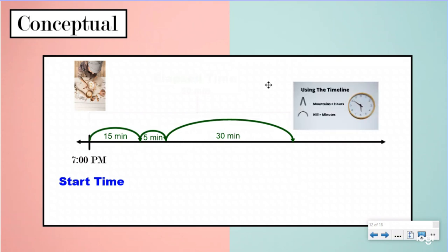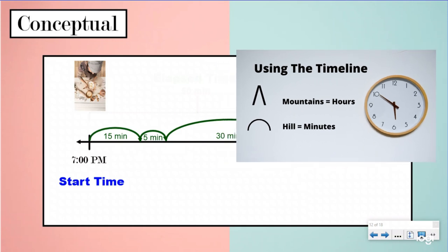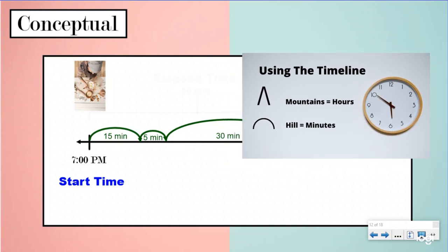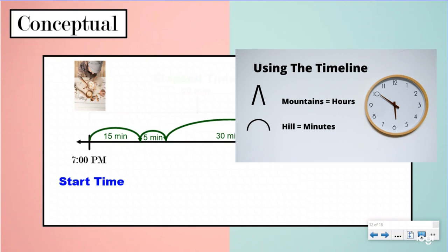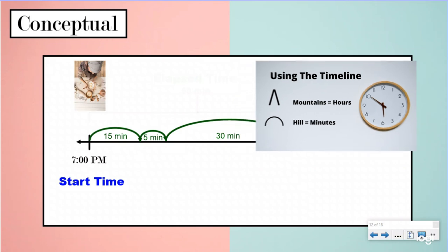On our timeline we use hills to represent minutes. Hills could be 15 minutes, five minutes, or 30 minutes. I call this the mountain and hill strategy. The mountains equal an hour - we're not going to use those today because we're staying within one hour. But I wanted to show it because as you progress in your skills, you'll begin to use the mountains in these questions as well.